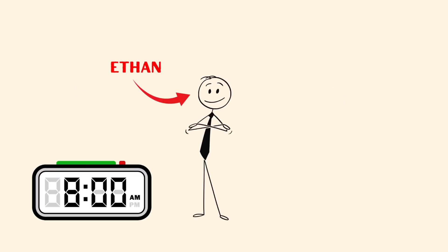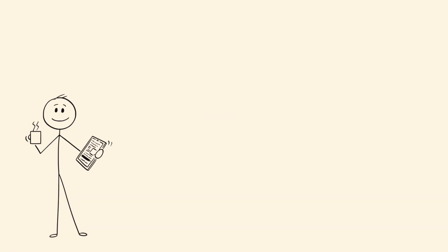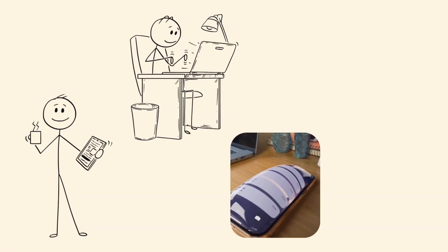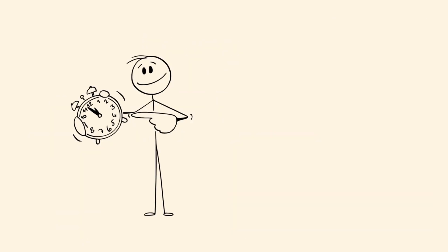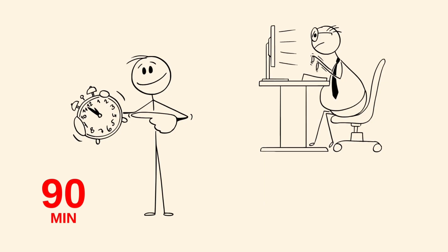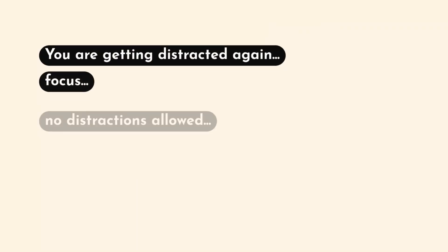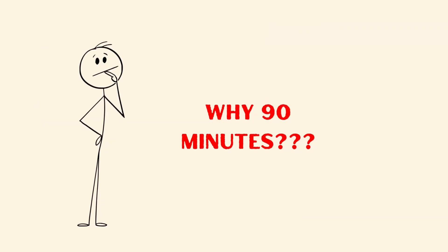It's 8 a.m. Ethan, a 31-year-old freelance developer, pours himself a coffee and sits at his desk. No email checking, no mindless scrolling. Instead, he does something strange. He sets a timer for 90 minutes and jumps straight into his hardest, most mentally demanding task. No distractions allowed. Why 90 minutes?